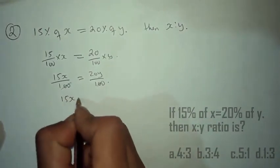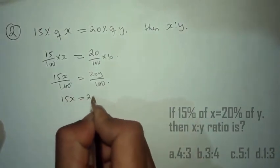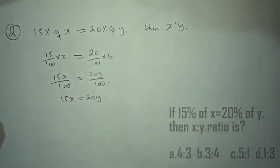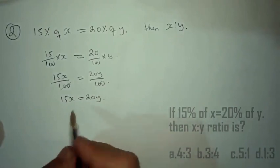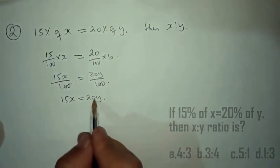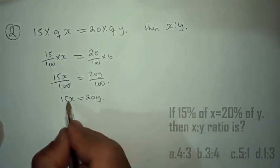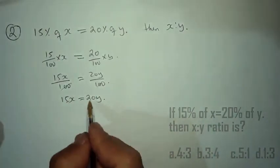So 15x equals 20y. Therefore 20 into y equals 15 into x.